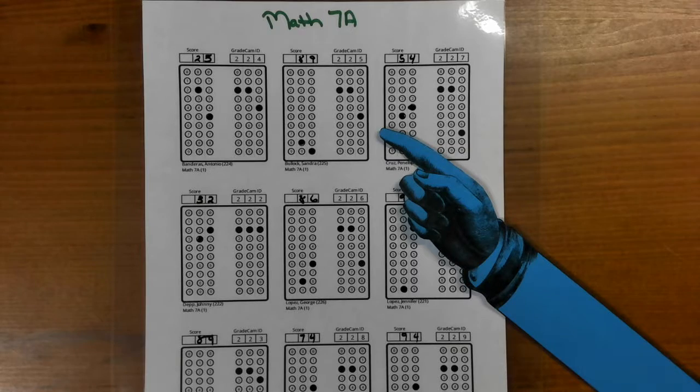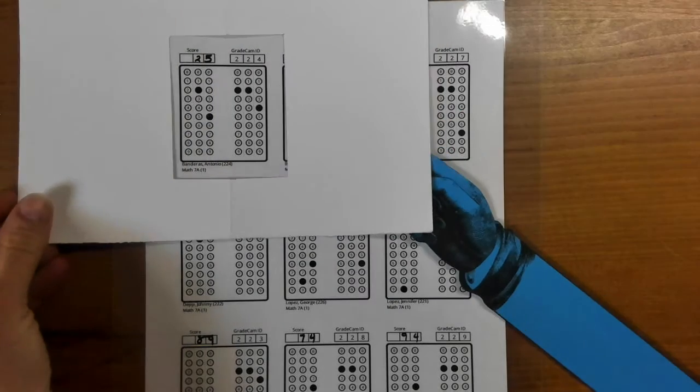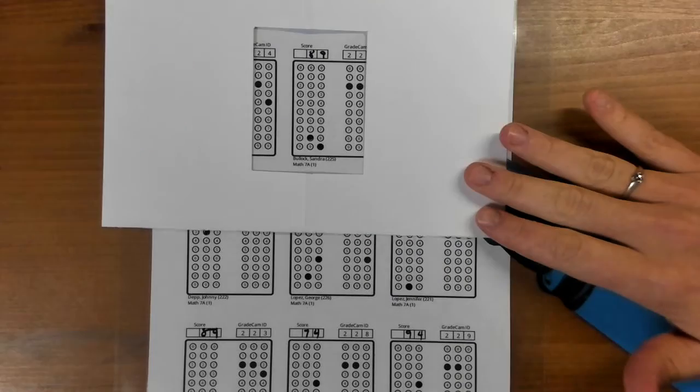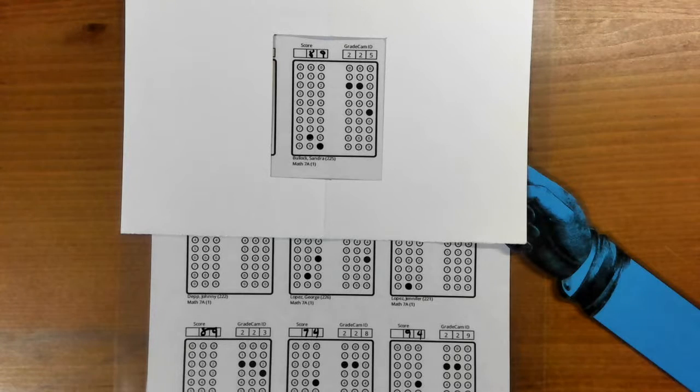Now, the easy way to scan these particular items is to use a viewfinder that you can block out all the others and you can only focus on scanning one score form at a time. You would just then move around the score form so that you can get to each student.